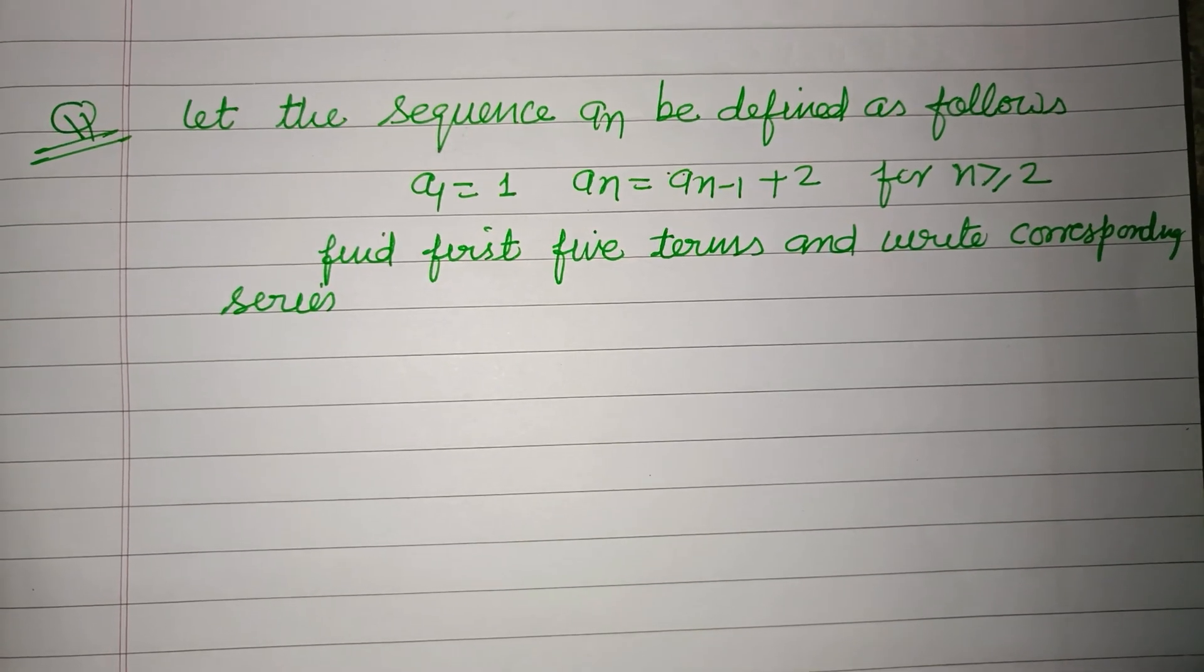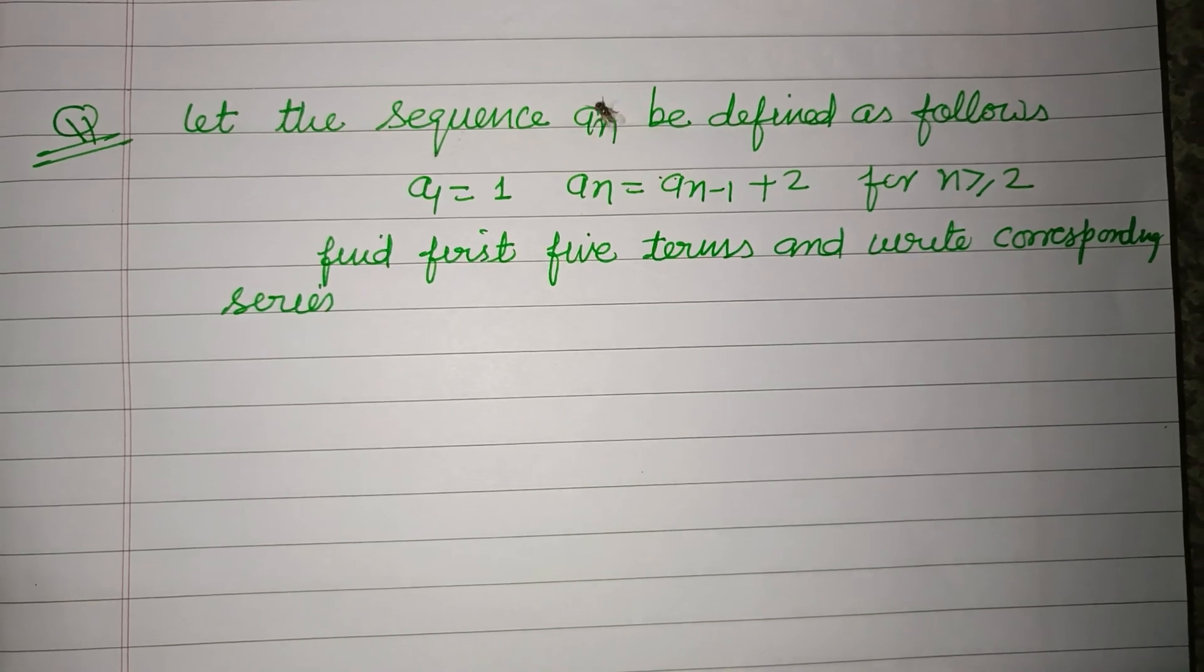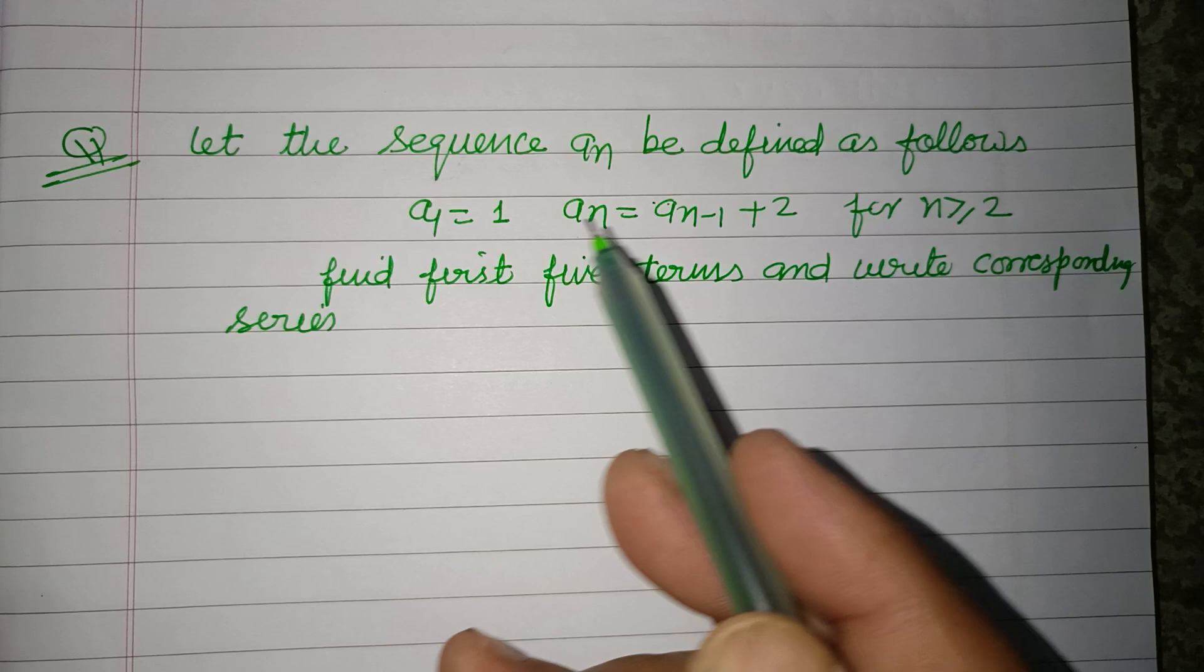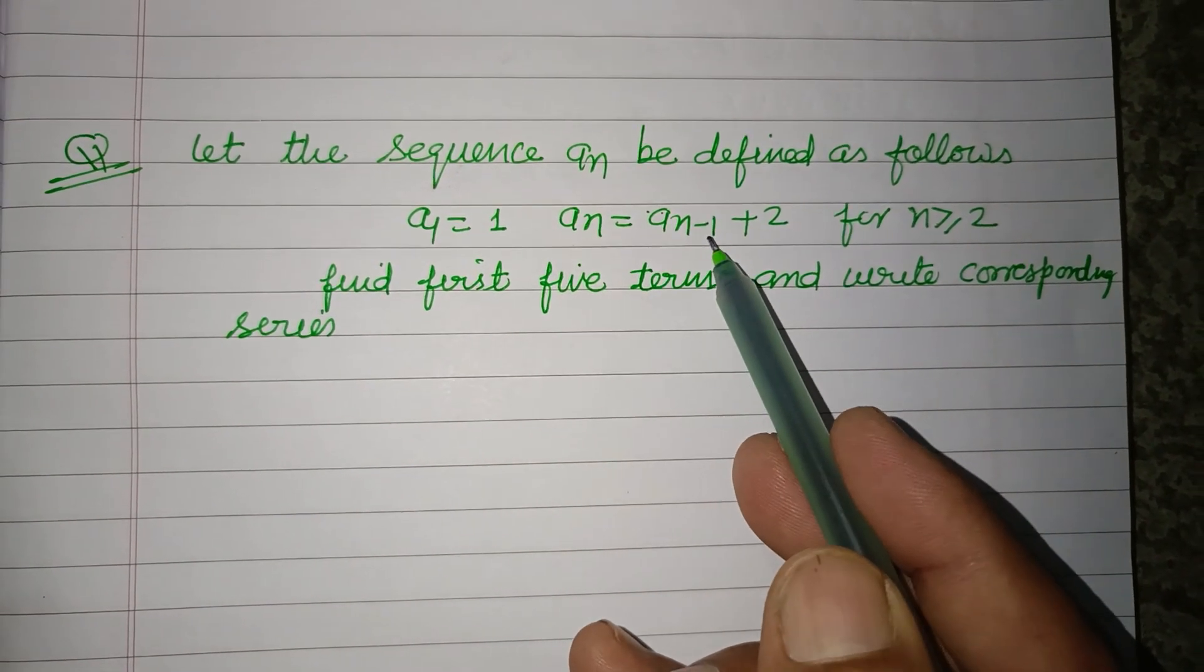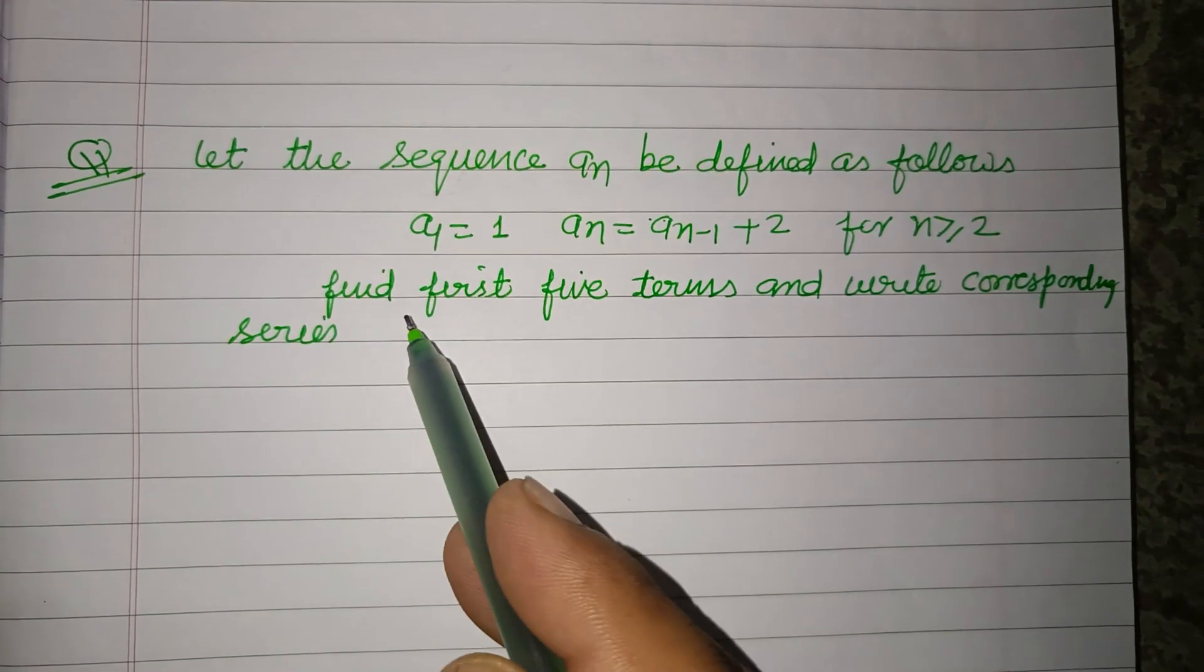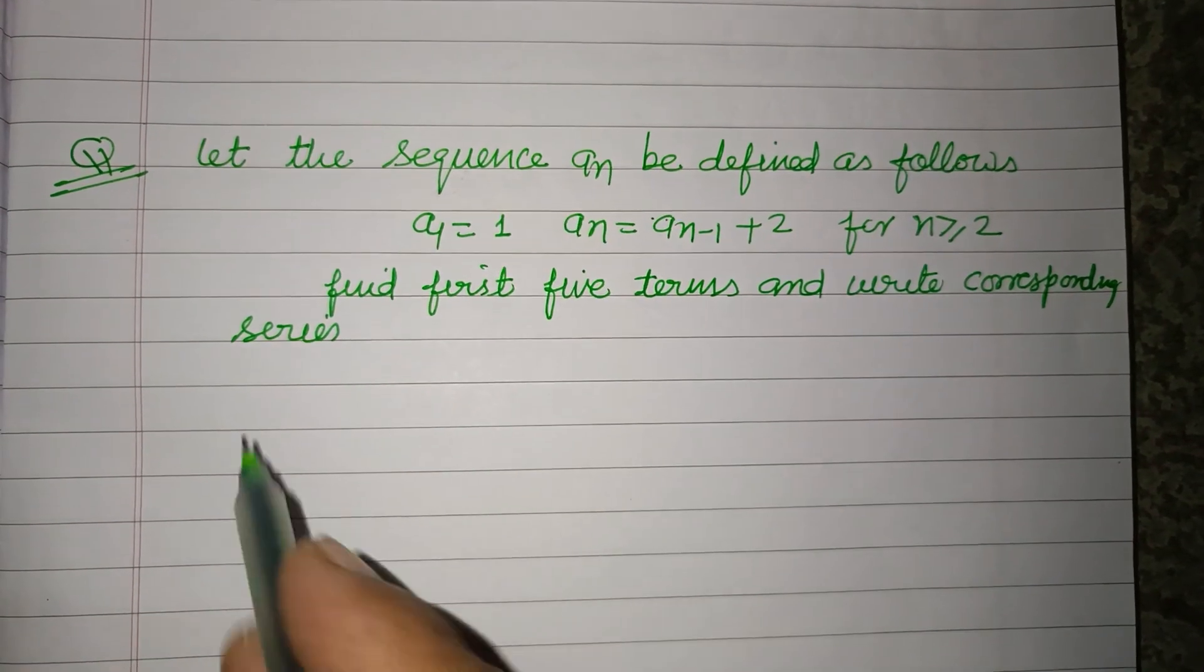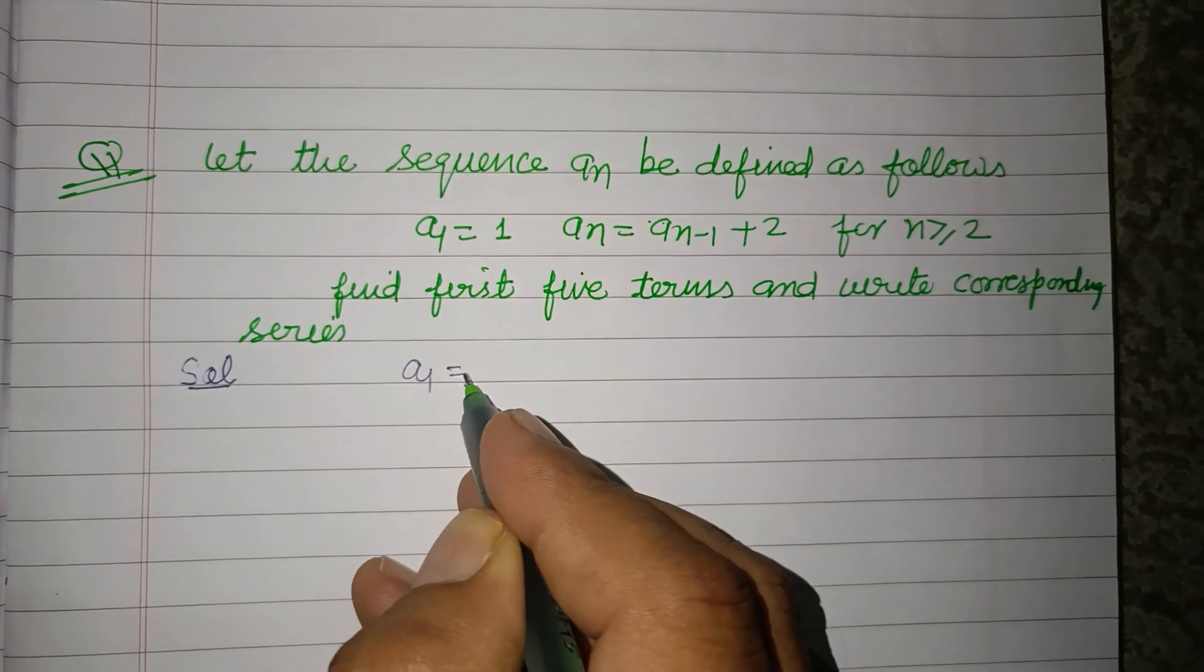Hello viewers, warm welcome to this YouTube channel. Question from arithmetic progression: Let the sequence aₙ be defined as follows: a₁ = 1, aₙ = aₙ₋₁ + 2 for n ≥ 2. Find the first five terms and write the corresponding series. So students, here the first term of the arithmetic series is given.